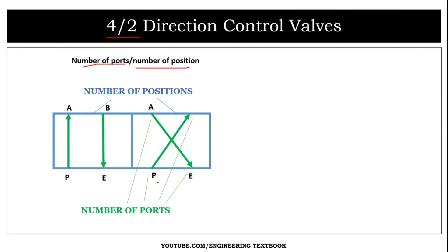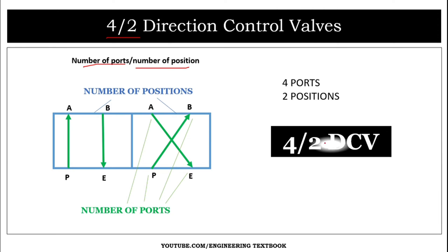The four ports are: port P, port E, port A, and port B. Port P is the pressure port, port E is the exhaust port, and ports A and B are the work ports. Since this valve consists of four ports and two positions, it is known as the 4 by 2 direction control valve.